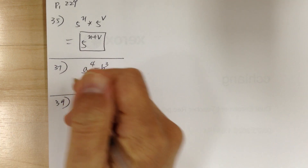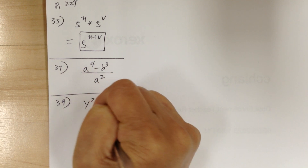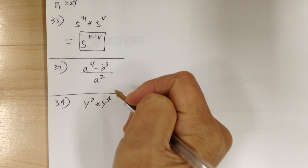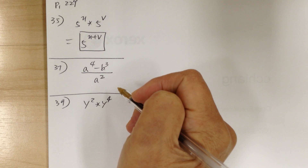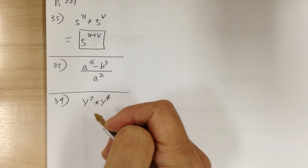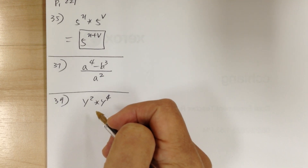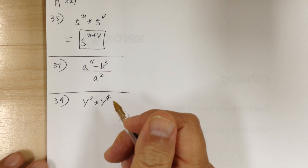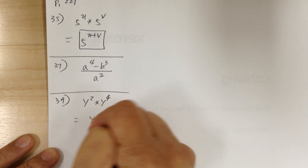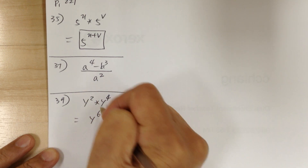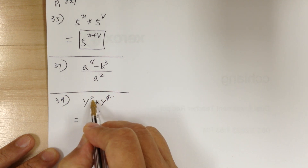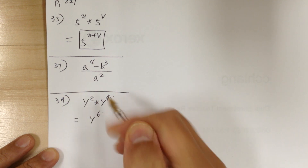Number 39, you have y squared times y to the 4. You can just use the product rule. So this will equal y to the 6. When you have multiplication, you add the exponents — 2 plus 4 gives you 6.